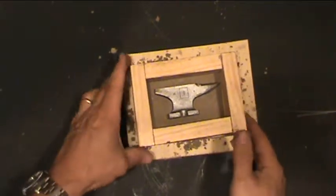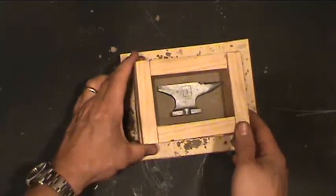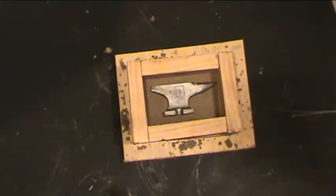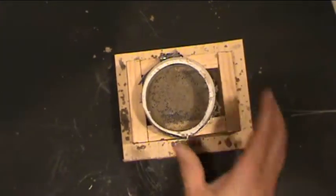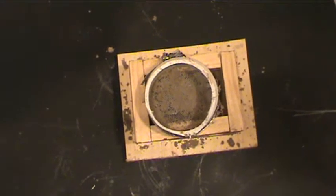This is our flask that we made, the cope and the drag. There are instructions on the website on how to make those, but basically you just need a box, and you need to be able to line up the two halves of the open box.